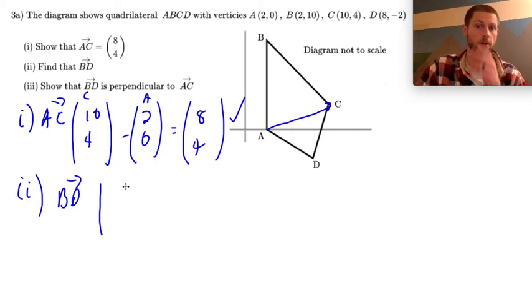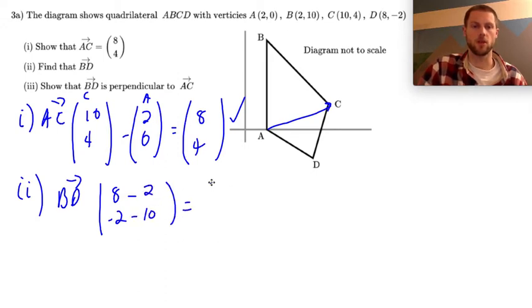Actually let's write this one a different way. Let's just subtract it all within one vector. So let's take the position vector (8,-2), that's D, and let's subtract B. So subtract 2 with the x, subtract 10 with the y and that's going to be equal to (6,-12). That's my vector BD.